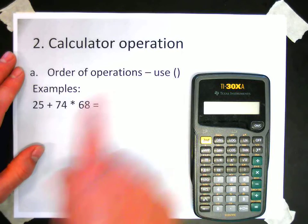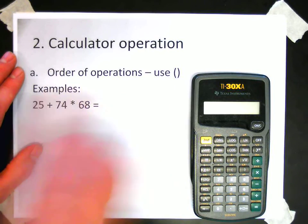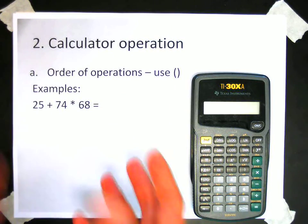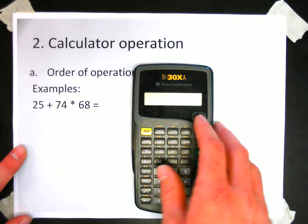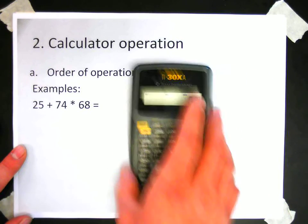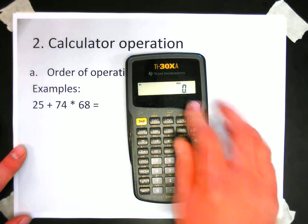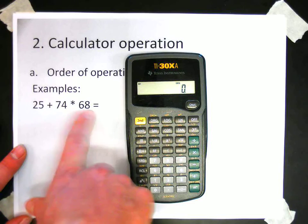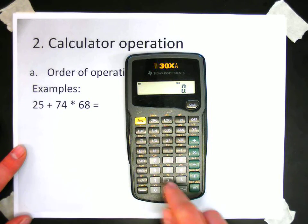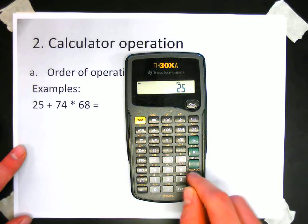So when we put in numbers like this, we often need to make sure the calculator puts it in correctly using the parentheses keys. So if I wanted to do this 25 plus 74 times 68, to be sure that it's doing it correctly, I could do 25 plus 74.